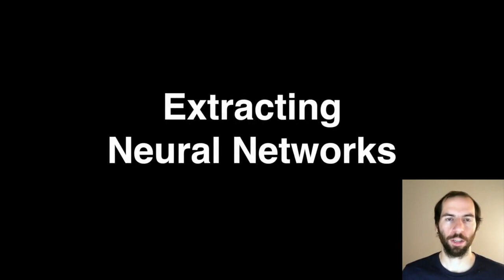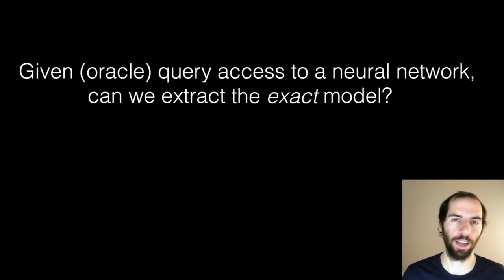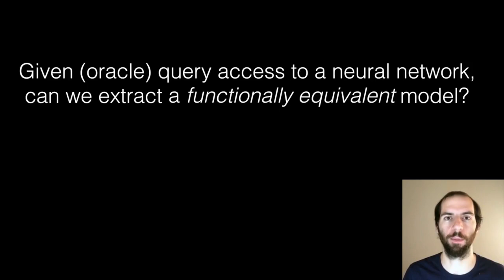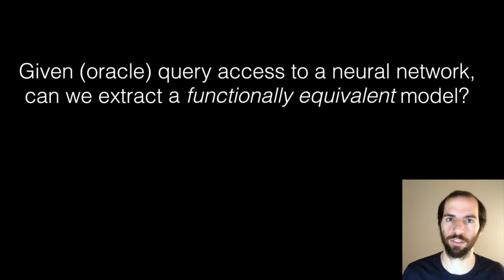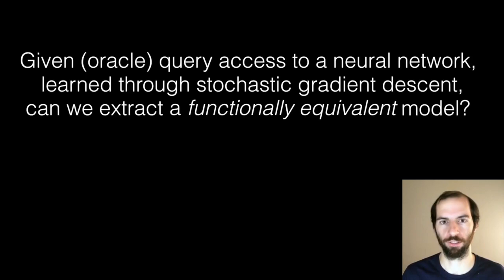So let's talk about extraction. Given oracle query access to a neural network, can we extract the exact model? It turns out there's a proof of impossibility — there are multiple neural networks that compute the same function but have different bit representations. So the best we can hope to achieve is what we call functional equivalent extraction — we just ask for any one model which behaves the same input-output as the model we're trying to steal. There's another proof of impossibility for some pathological neural networks, so what we ask instead is: in the typical case of a neural network learned with stochastic gradient descent, are we able to achieve functionally equivalent extraction? The main result of our paper says yes, empirically we are able to do this.